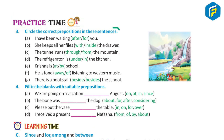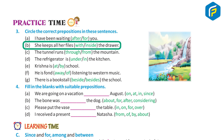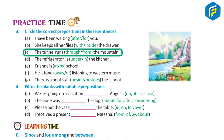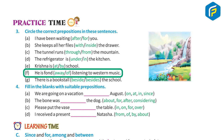Practice time 3: Circle the correct preposition in these sentences. A. I have been waiting for you. B. She kept all her files inside the drawer. C. The tunnel runs through the mountain. D. The refrigerator is under the kitchen. E. Krishna is at school. F. He is fond of listening to western music. G. There is a book stall beside the school.